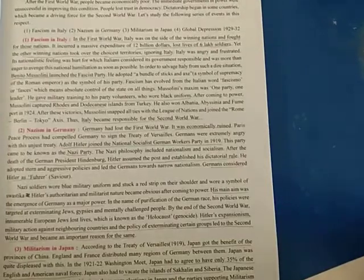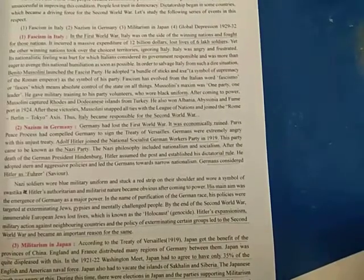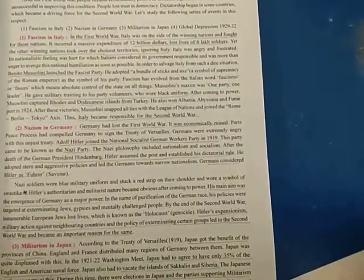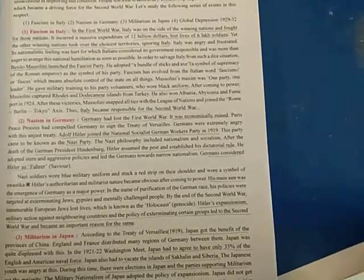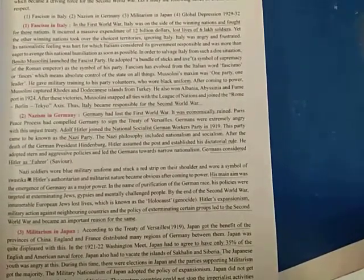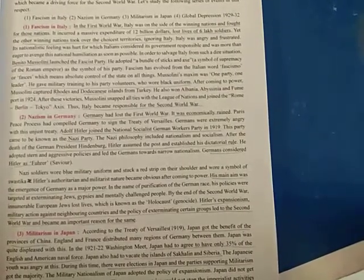Italy was on the side of the winning nations in the First World War, but they were not given equal respect by the other nations. They had incurred a massive expenditure of around 12 million dollars and also lost the lives of six lakh soldiers. Despite this, the other winning nations took over choice territories and ignored Italy. Italy was frustrated and angry about the way they were treated, and the people believed the government was responsible for all this.